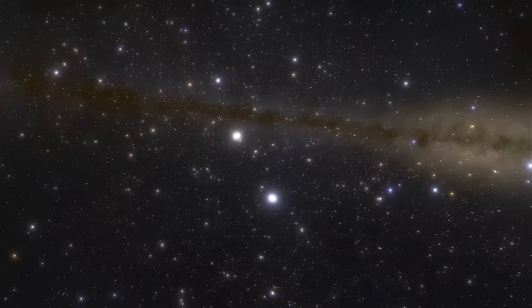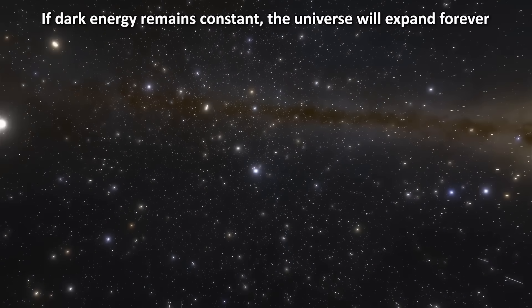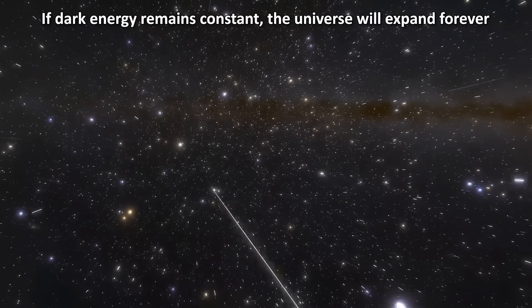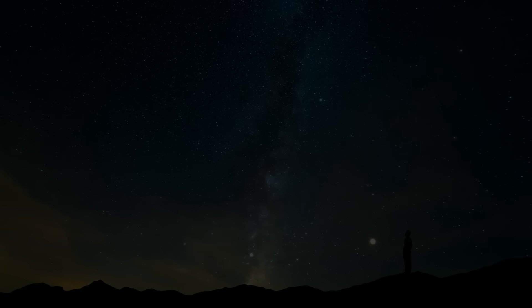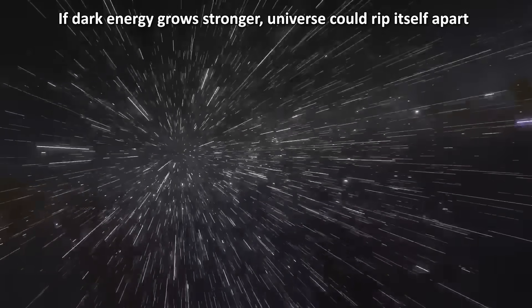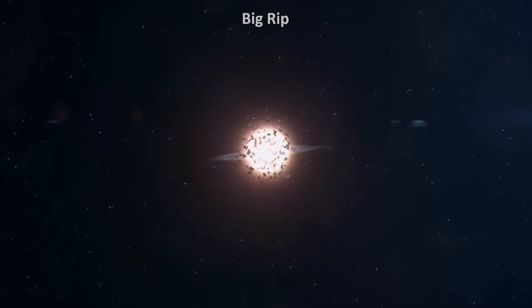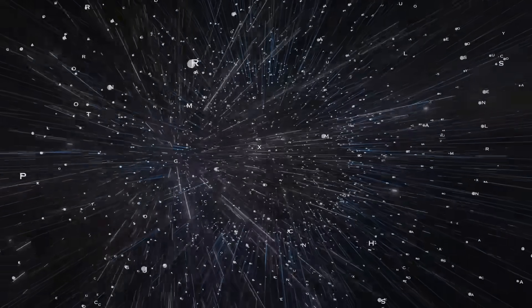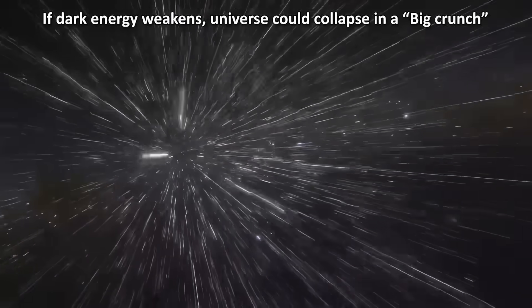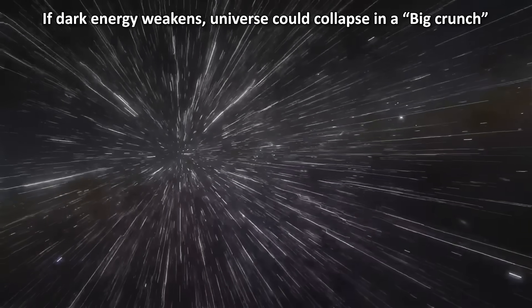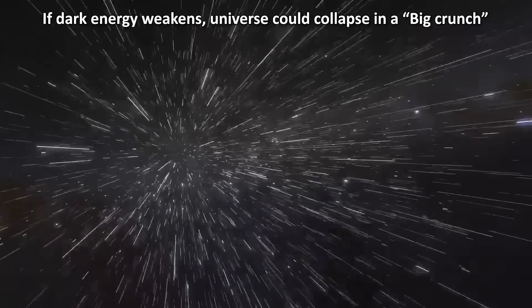If these observations are confirmed, we might then wonder whether dark energy and inflation could be two sides of the same coin, linked by an unknown quantum field. So what does this mean for the future of the cosmos? If dark energy remains constant, the universe will keep expanding forever. Galaxies will drift apart and eventually the night sky will go dark. If dark energy grows stronger over time, we would face a kind of terrifying scenario known as the big rip, where repulsive gravity eventually becomes so strong that it tears apart galaxies, stars, planets, even atoms, and then spacetime itself. On the other hand, if dark energy weakens, the universe could one day stop expanding and collapse back in something called the big crunch, possibly setting the stage for a new big bang in a cyclic universe.